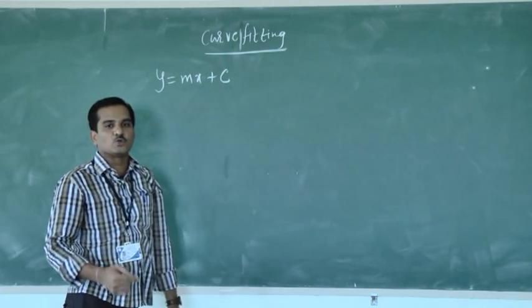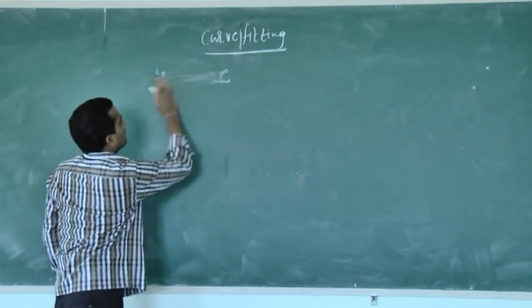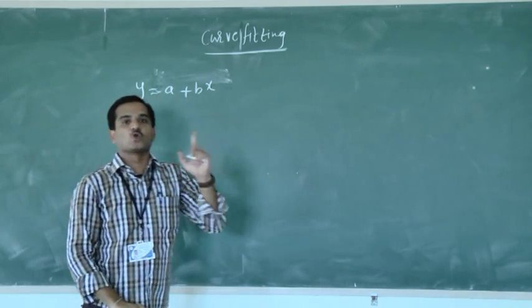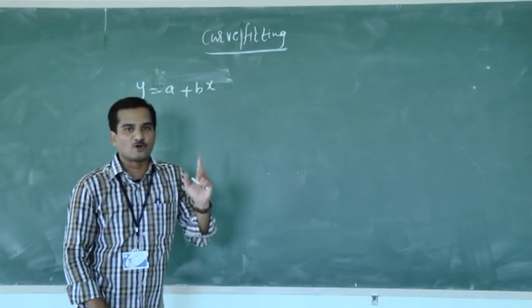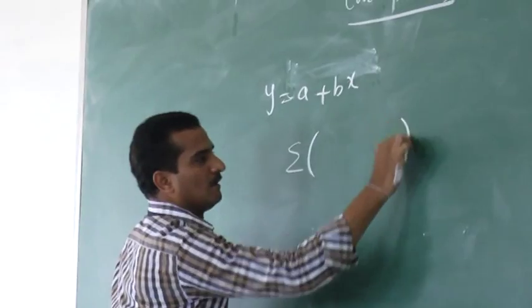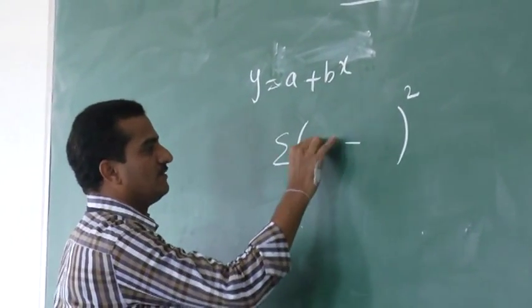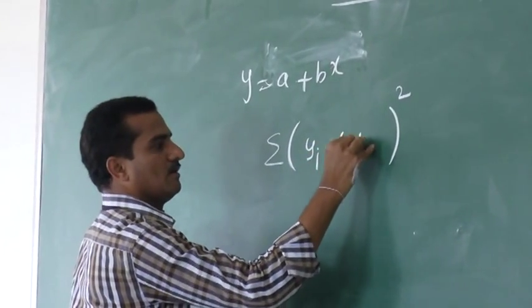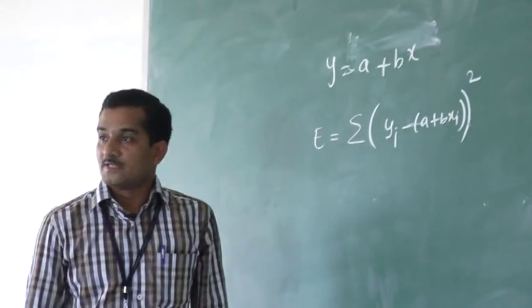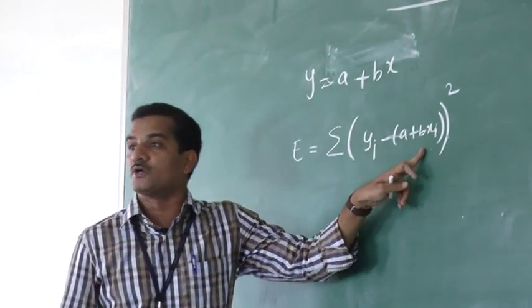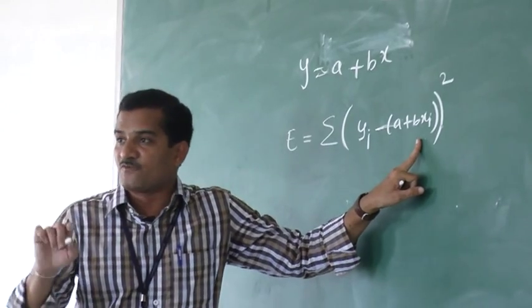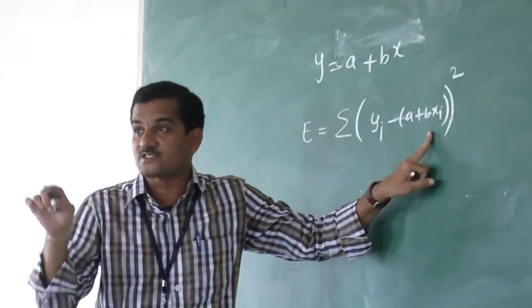There are many curves. We are going to take one example: the straight line Y = A + BX, where the unknown constants are calculated using a principle called the method of least squares, or the principle of least squares. This involves summing and squaring the difference between the observed and expected values, which is called the error.